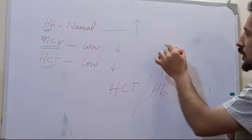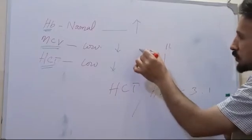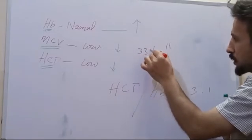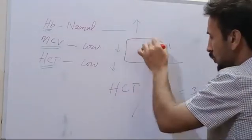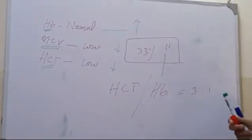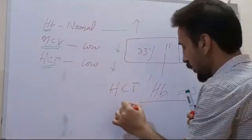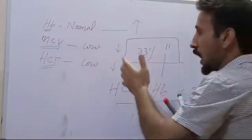For example, if the Hb is 11, the HCT must be 33%. So if there is a discrepancy between these two, this shows that there is some abnormality in the lab parameter.